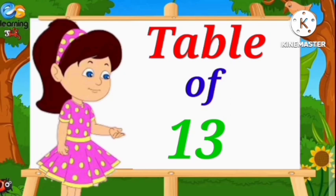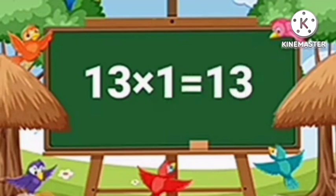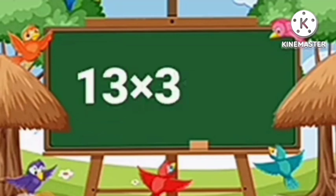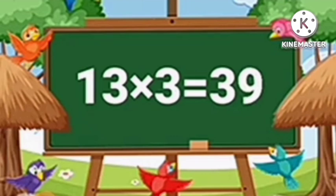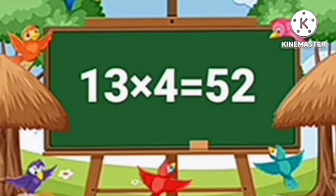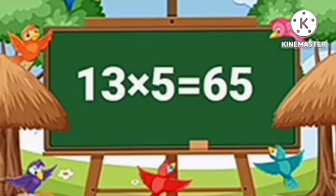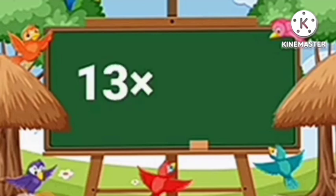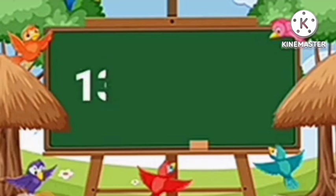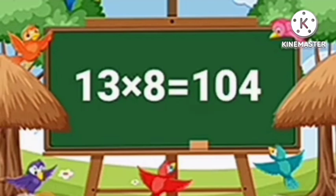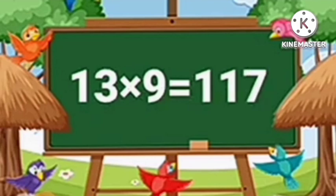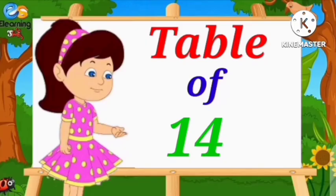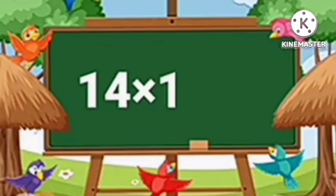Table of Thirteen. Thirteen ones are thirteen. Thirteen twos are twenty-six. Thirteen threes are thirty-nine. Thirteen fours are fifty-two. Thirteen fives are sixty-five. Thirteen sixes are seventy-eight. Thirteen sevens are ninety-one. Thirteen eights are one hundred four. Thirteen nines are one hundred seventeen. Thirteen tens are one hundred thirty.